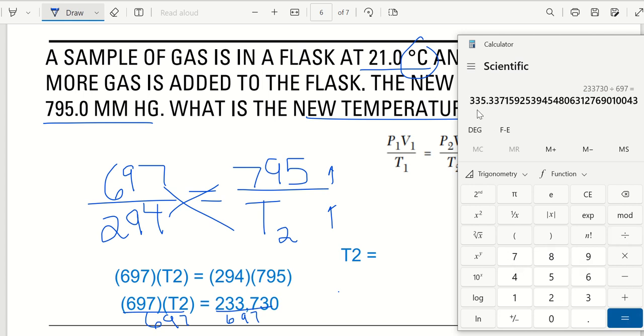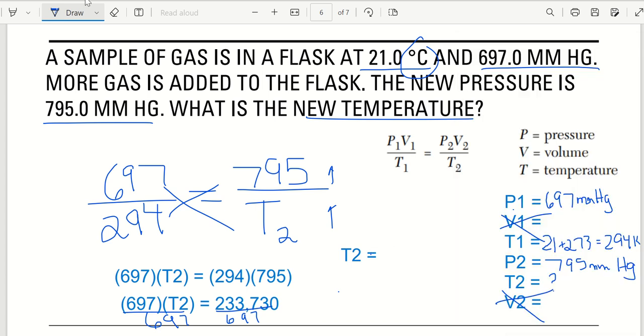So take this number and we're going to divide it by 697 equals. It did. 335.3. So temperature 2, 335.3. Kelvin. There we go. Well, that's an example of how you solve for combined gas laws. Sometimes you can cross out temperature. Sometimes you can cross out pressure. Sometimes you can cross out volume. You're only going to be able to cross out one set. Sometimes you have to use it all. So be careful.